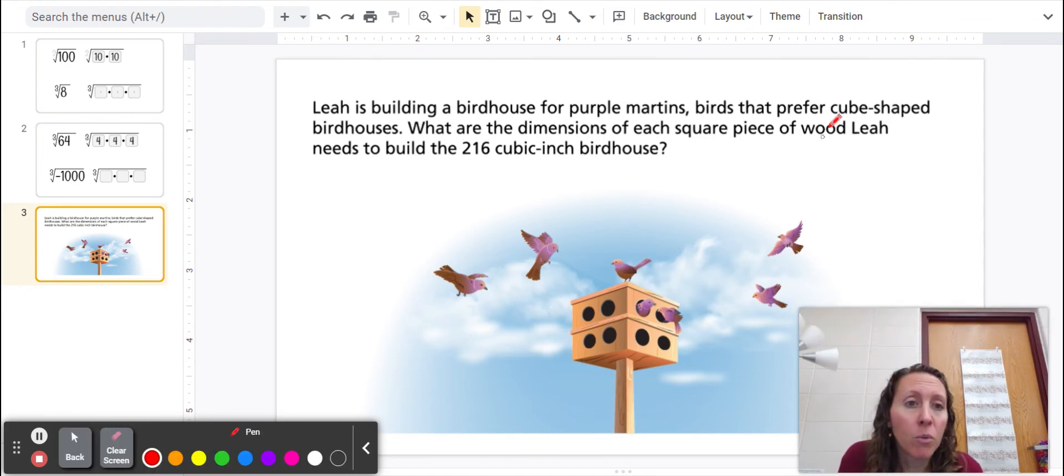Now, let's just review the word cube. Cube means there is a square on all of the sides, and a square has the same length and width. What are the dimensions of each square piece of wood Leah needs to build the 216 cubic inch birdhouse?